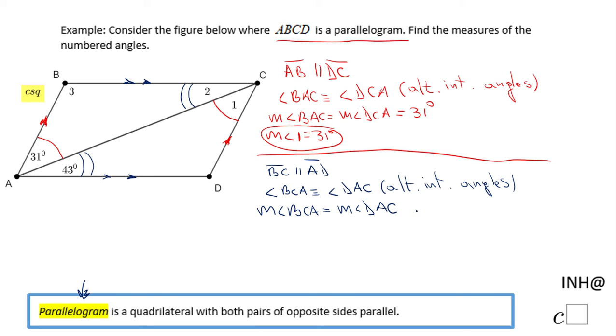And if you notice, the measure of angle DAC is 43 degrees. So the measure of angle BAC, which is nothing else than angle 2, is going to be 43 degrees.